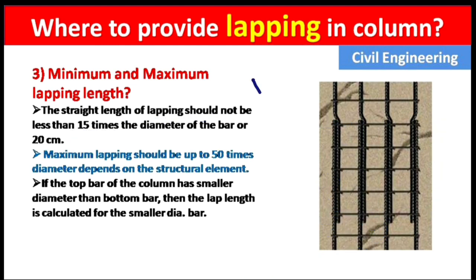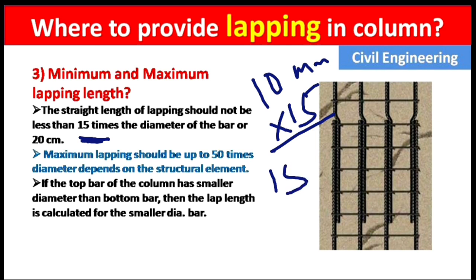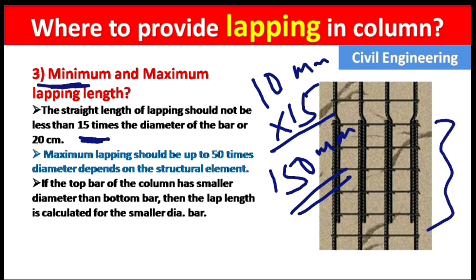For example, if we use a 10 mm steel rod, the minimum lapping is 15 times 10 mm, which equals 150 mm. So 150 mm is the minimum overlapping length for a 10 mm bar. Alternatively, 20 cm equals 200 mm, since 1 cm equals 10 mm.